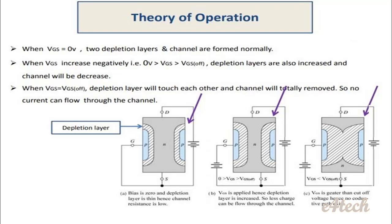When the channel is totally removed, no current can flow through the channel. The gate-source voltage controls the depletion layer thickness and thus the channel width. When VGS is made increasingly negative, the current decreases until it stops. This is why J-FET is a voltage controlled device — by controlling VGS, we can control the flow of current.